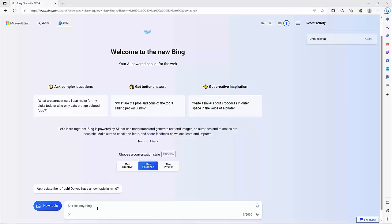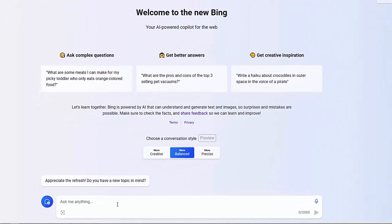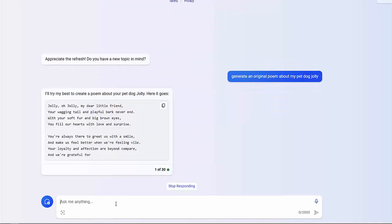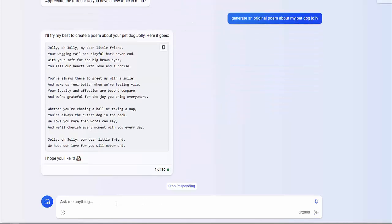Bing search is presented in the form of a chatbot. You provide the input in this text box and Bing responds back with an output. So let's go ahead and generate some original content. I'm going to ask Bing to generate an original poem about my pet dog Jolly. And here Bing is generating the poem. Now I'm not 100% sure if it is an original poem or not, but for sure it looks good to me.